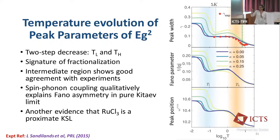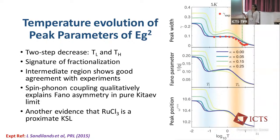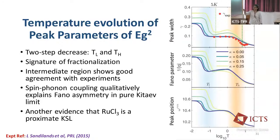Let's look at the temperature evolution of the peak parameters of the EG2 peak. Focusing on the purple curve, I've plotted the peak width, Fano parameter, and peak position. The first thing you notice is a two-step decrease at TL and TH — a signature of fractionalization. In the intermediate region, our theory agrees well with experiments. So we can say that spin-phonon coupling qualitatively explains this Fano asymmetry even for the pure Kitaev model, providing further evidence that alpha ruthenium chloride is a good Kitaev spin liquid candidate.